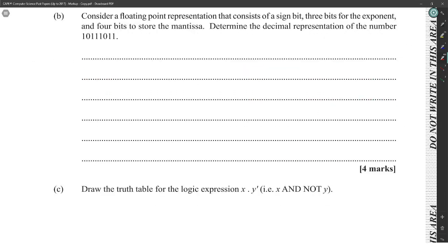Consider the floating point representation that consists of a sign bit, three bits for the exponent, and four bits to store the mantissa. The sign is negative, the exponent is 011 which is equal to three, and the mantissa is 1011. We take the mantissa 1011 and multiply it by 2 to the power of 3, which means move the decimal point three places to the right. We'll get 101.1, which is 5 and 0.5, so 5.5. The sign is negative, so the answer is negative 5.5.